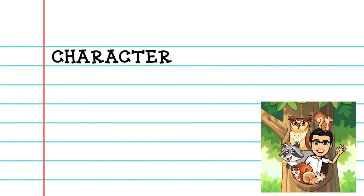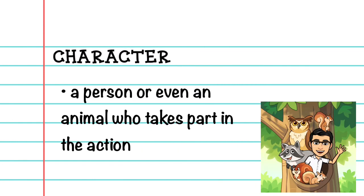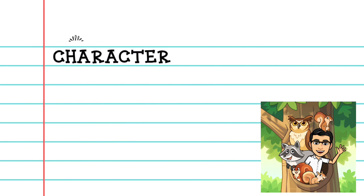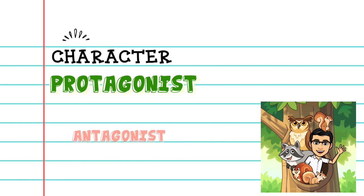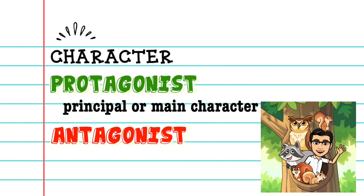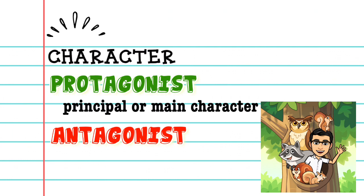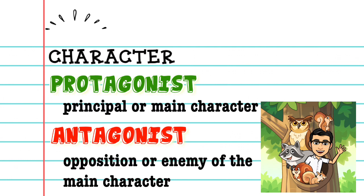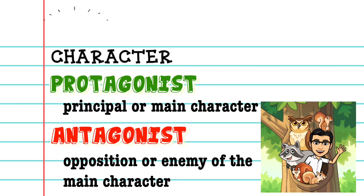Let's talk about each element. First one is the characters. A character is a person or even animal who takes part in the action. Characters can be protagonist and antagonist. Protagonist is the principal character of a story, o yung bida, while antagonist is the opposition or enemy of the main character, the contrabida.